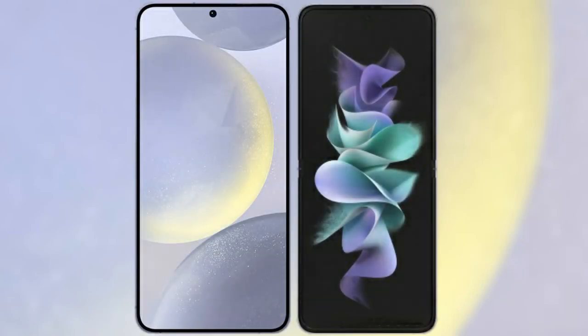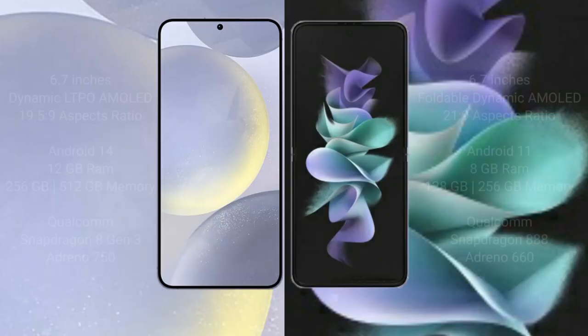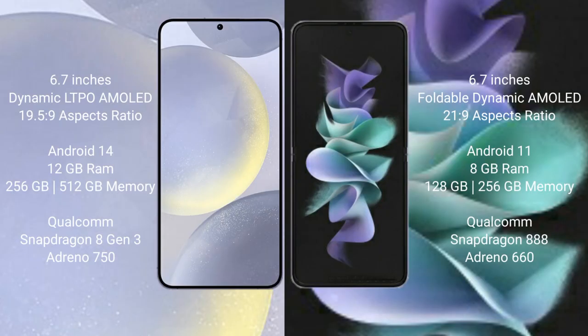I will compare the new Samsung Galaxy S24 Plus with Samsung Galaxy Z Flip 3. Samsung Galaxy S24 Plus comes with a 6.7-inch Dynamic LTPO AMOLED display and Exynos 2400 processor. Samsung Galaxy Z Flip 3 comes with a 6.7-inch Foldable Dynamic AMOLED display and Snapdragon 888 processor.